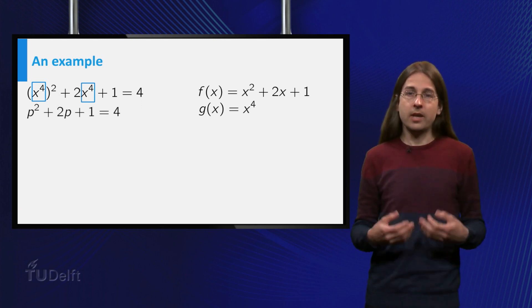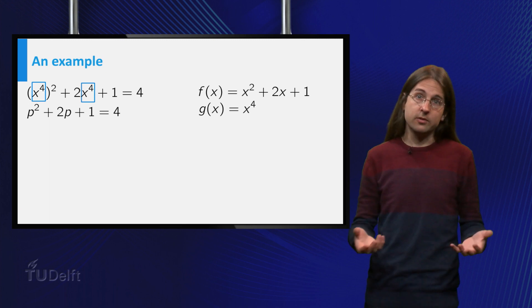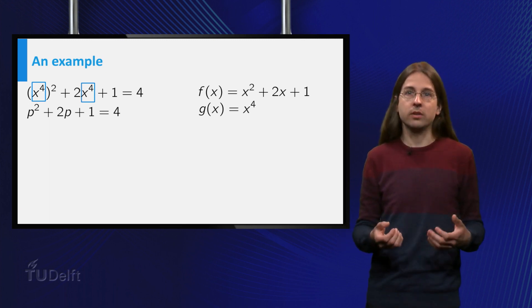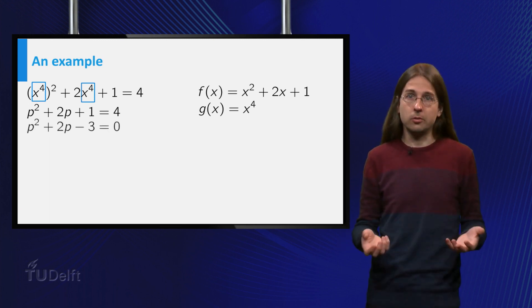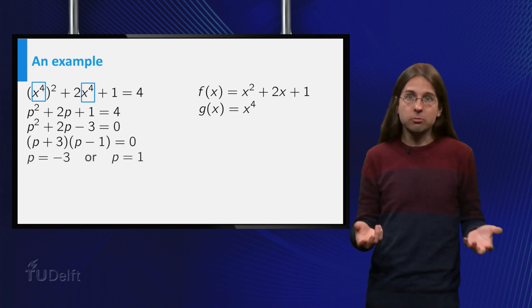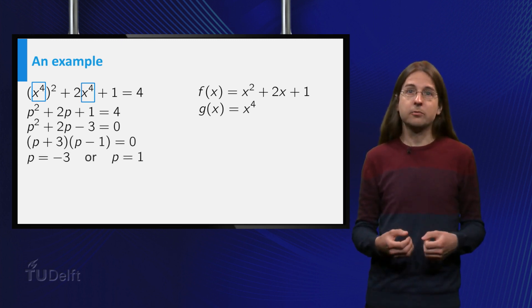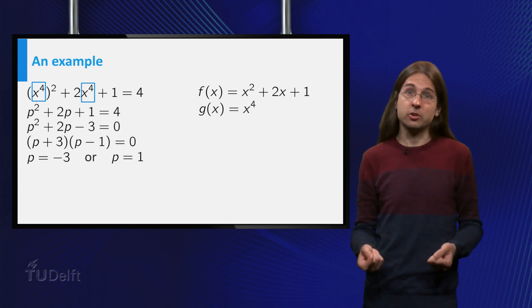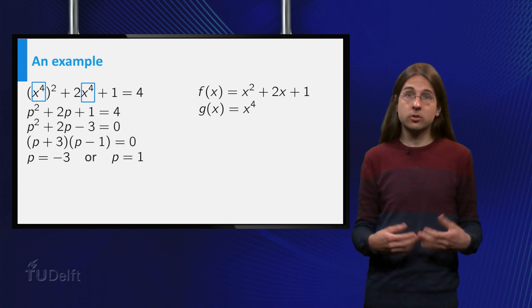Thus we first solve f equals 4, which gives p² + 2p + 1 = 4, so p equals -3 or p equals 1. Hence, f equals 4 whenever g equals -3 or g equals 1.